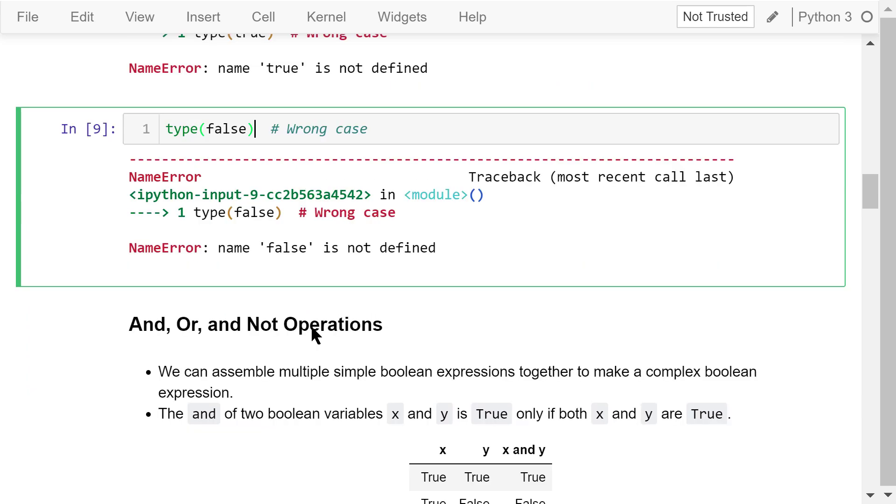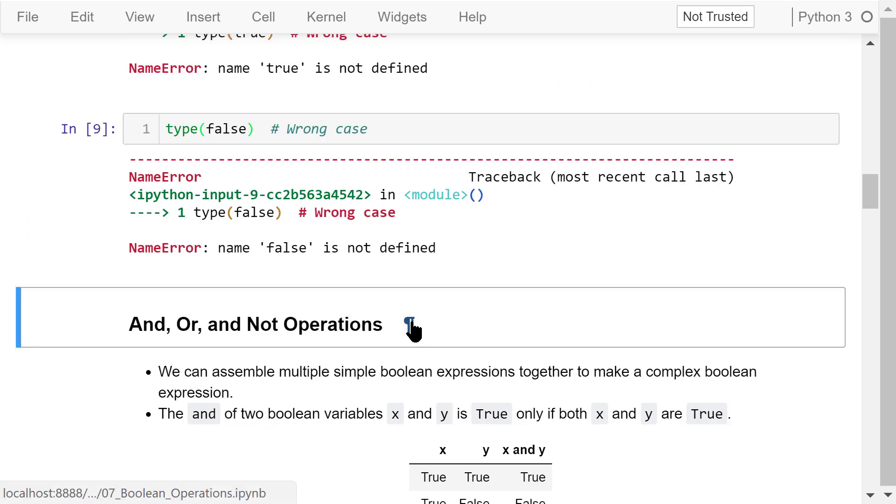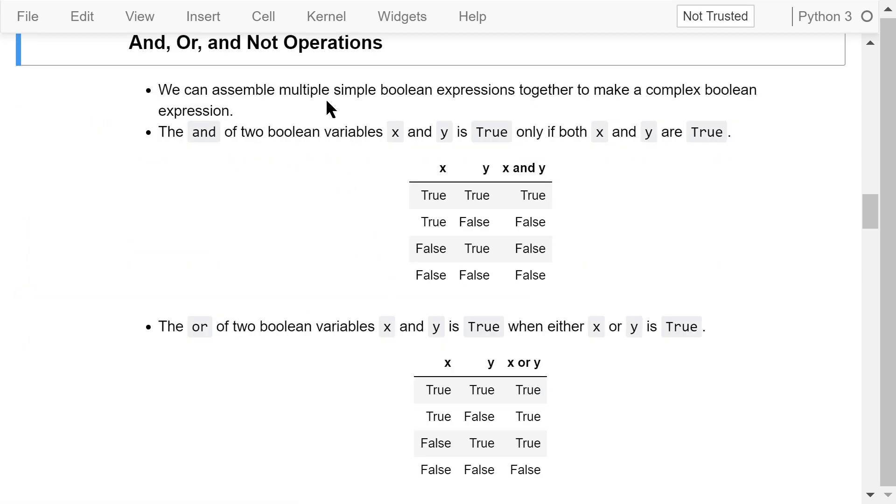Now I will talk about how to assemble multiple simple boolean expressions together to make a complex boolean expression using the AND, OR, NOT operators. The AND operation of two boolean variables, x and y, is true only if both x and y are true. It resembles a multiplication operation.